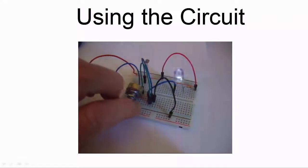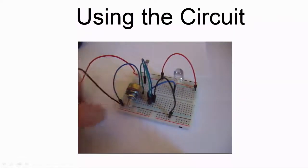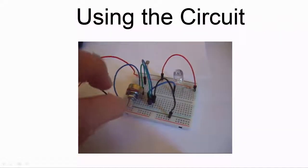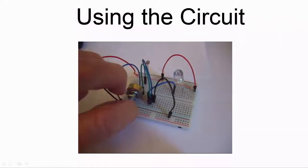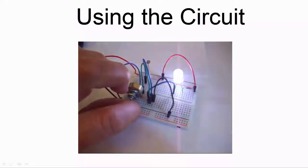If, on the other hand, the LED is already illuminated when you switch on the power, try turning the knob on the variable resistor until the LED switches off.